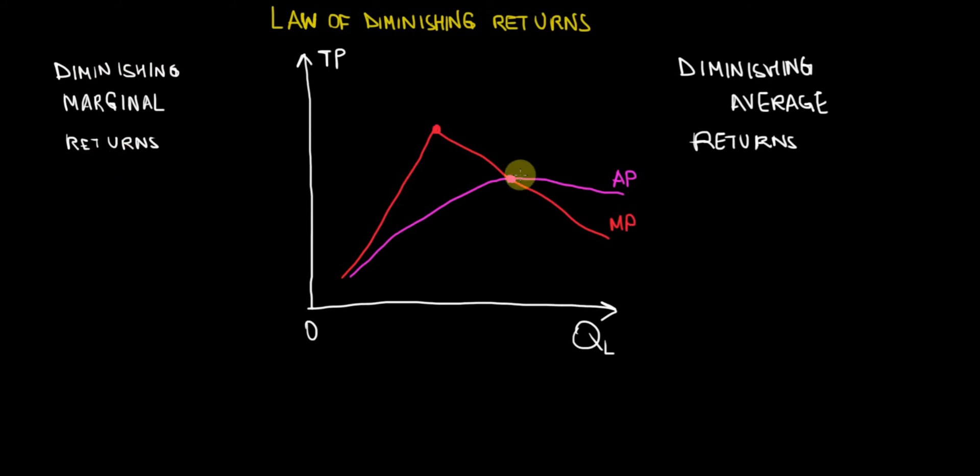And with the same logic we showed algebraically that after the average product and marginal product intersect and the marginal product is decreasing, then as a result of that the average production will start falling as well. The average product will start falling as well because of the diminishing returns. So that's called the diminishing average returns.